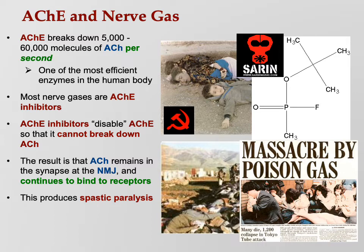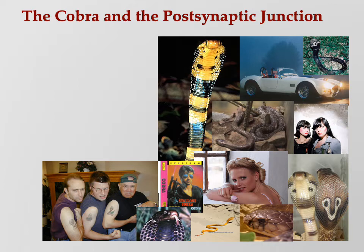Continuous muscle contraction causes all of your muscles to try to contract simultaneously — we call that spastic paralysis. If your flexors and extensors contract at the same time, your arm can't flex or extend because the two muscles work against one another, so you become frozen. Nerve gas was used in World War One and was so horrible that nations signed an agreement never to use it again. However, nerve gas continues to be used — the Soviets used it in Afghanistan, Saddam Hussein used it in Iraq against the Kurds, and terrorists used it in an attack in the Tokyo subway.